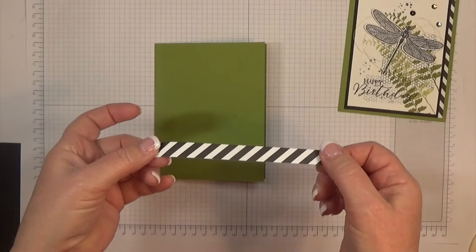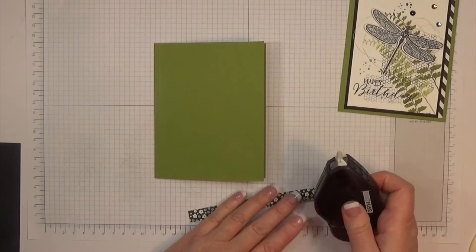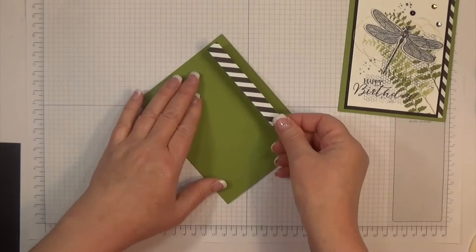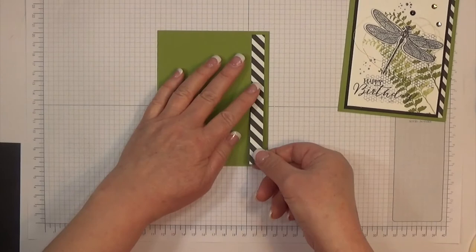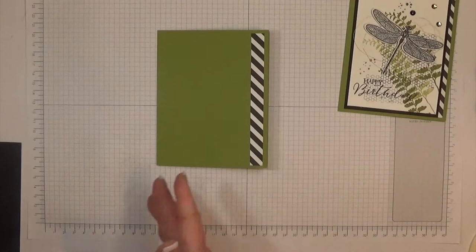Next, I'm using a half inch by five and a fourth inch designer series paper from the neutrals designer series paper stack. The designer series paper stacks are wonderful—they coordinate with all of our inks. If you purchased Old Olive ink and you have the brights collection designer series paper stack, you know that your Old Olive ink is going to coordinate perfectly with the cardstock.